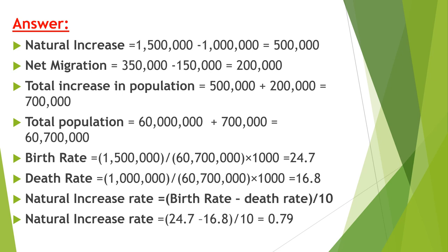We calculate the birth rate and death rate in the same way as the previous example. The birth rate equals the number of births divided by total population times 1,000, which equals 24.6. The death rate equals 16.8. The natural increase rate equals the birth rate minus the death rate divided by 10, which equals 0.79.